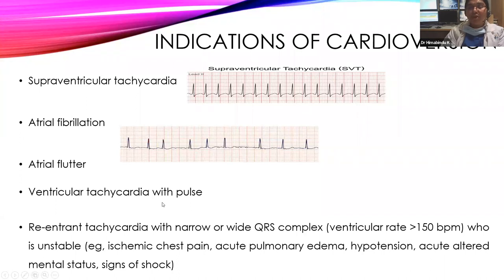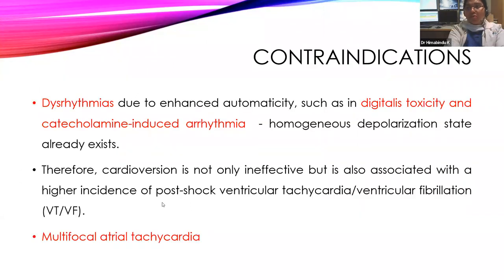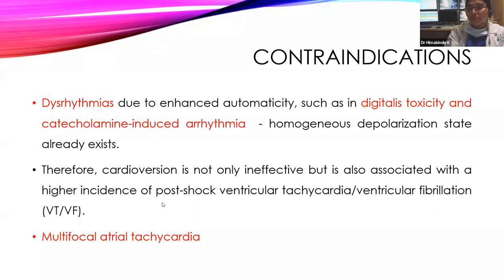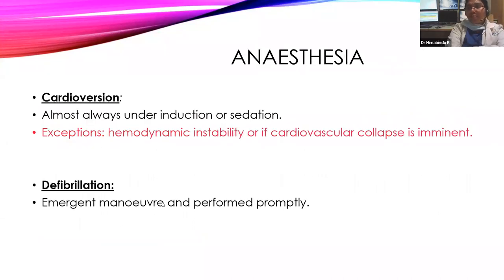Contraindications for defibrillation and cardioversion include dysrhythmias due to enhanced automaticity, such as digitalis toxicity and catecholamine-induced arrhythmia. These are not used because of a homogeneous depolarization state — if cardioversion is used, the patient will have a higher incidence of post-shock VT or VF. Multifocal atrial tachycardia is also a contraindication.